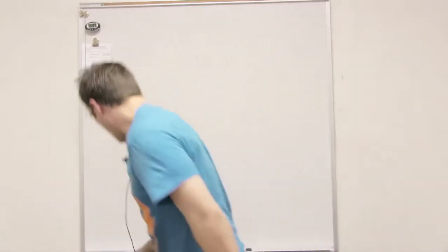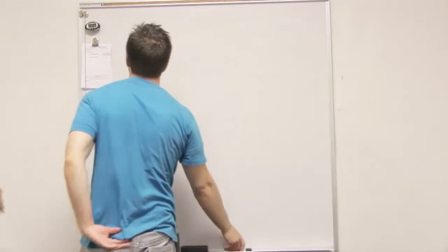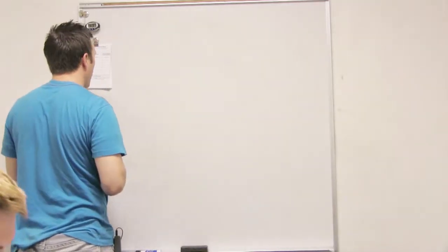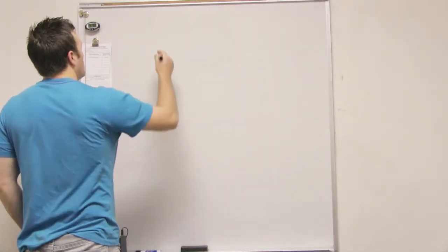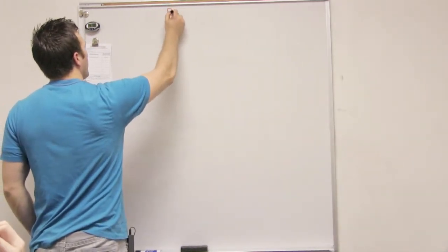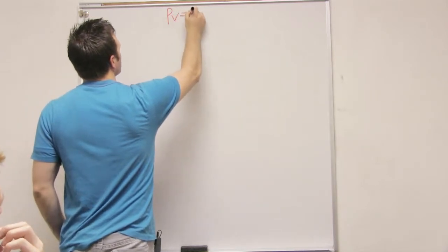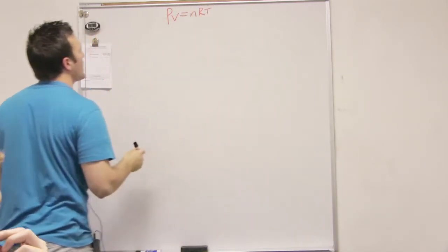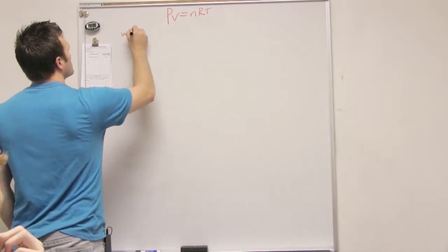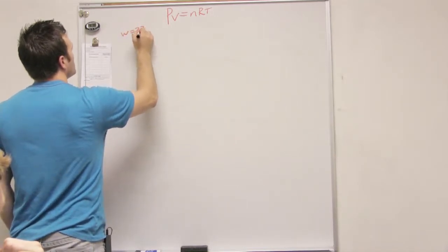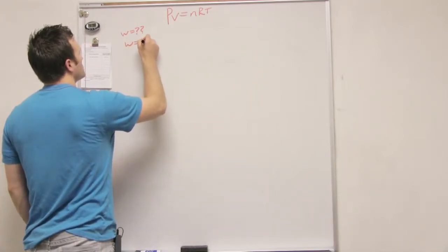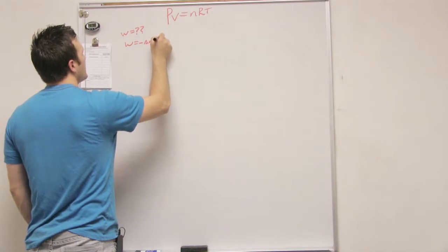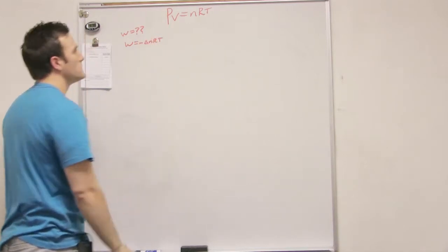Calculate the work. Okay. So we want work. So what's the first thing we're going to write? Well, the formula. Yeah. P equals nRT. Okay. And we want work. So work is going to equal negative delta nRT. Yeah.